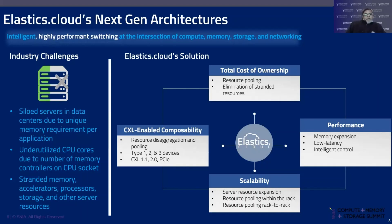Elastics.Cloud's solution can reduce TCO, increase performance at the system level, and create a composable infrastructure. We create an efficient infrastructure that reduces TCO, increases efficiency, and can scale to N racks within an aisle to share devices and remove the strandedness of memory and other components inside the server system.